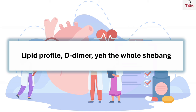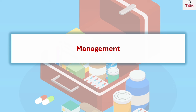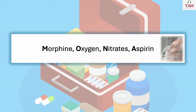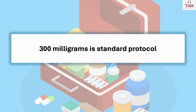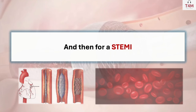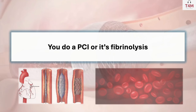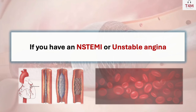For management, remember the mnemonic MONA: Morphine, Oxygen, Nitrate, and Aspirin.